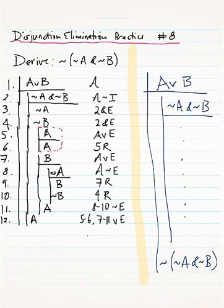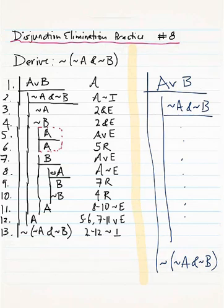And now, what I notice is that beneath my secondary assumption NOT A and NOT B on line 2, I have both NOT A and A—I have a sentence and its negation. So I can introduce my negation to write NOT, NOT A and NOT B. And that comes from lines 2 through 12 by negation introduction.